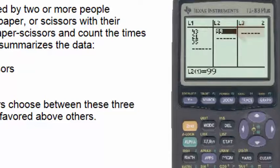Since 99 divided by 3 is 33, if these three options did form a uniform distribution then the expected number for each of these options should be 33. So we'll put the number 33 as the expected values into list two.